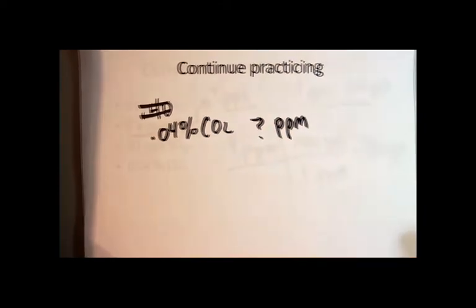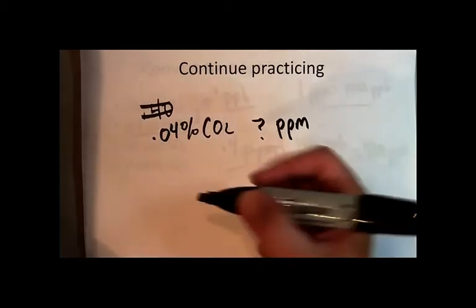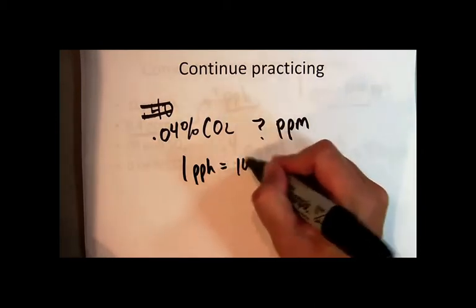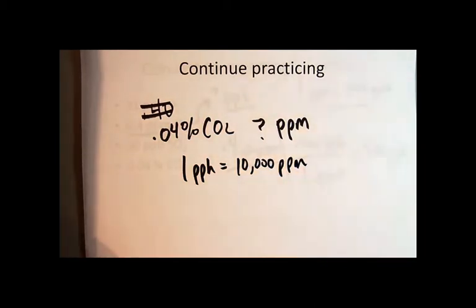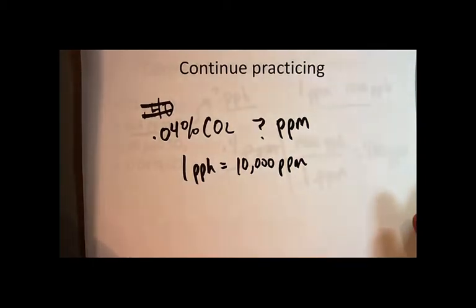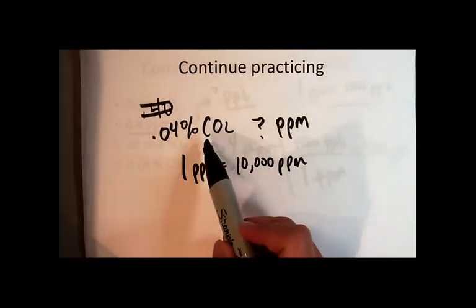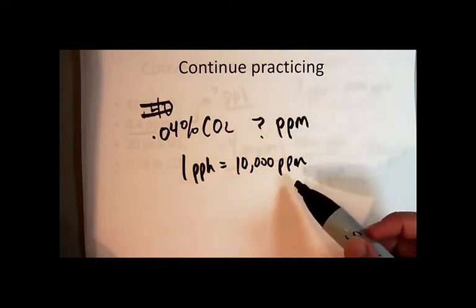Well, you can go back to your conversion factor by looking at the equality: one part per 100 was equal to 10,000 parts per million. And just like we did in the previous example, set up a unit factor multiplied by the 0.04, in this case we would call it parts per 100, and then you'll get your answer.